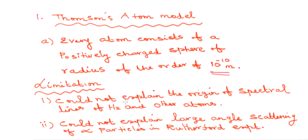The second limitation is: it could not explain Rutherford's large angle scattering. When alpha rays are sent, they are deflected. The reason for large angle scattering of alpha particles could not be explained by Thomson's atom model. These are the two limitations of Thomson's atom model.